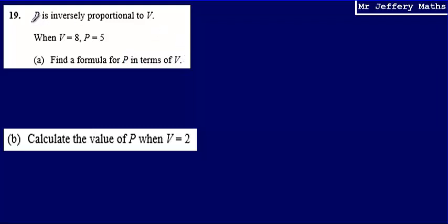We're asked to find a formula for P in terms of V. Now the first thing to know is that we're told at the top that P is inversely proportional to V. Now when two variables, such as P and V, when two variables are inversely proportional, what we can say is that the relationship between them is that P will be equal to K over V.